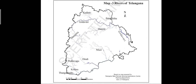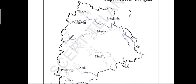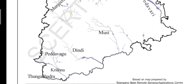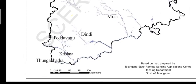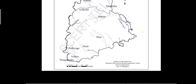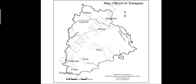Look at this map. You can see the tributaries of the Godavari and Krishna rivers. Kadem, Maneru, Manjira, and Pranahita are tributaries of the Godavari. Musi, Dhandi, Peddavagu, and Tungabhadra are tributaries of the Krishna. All these tributaries join the river to make it broader.